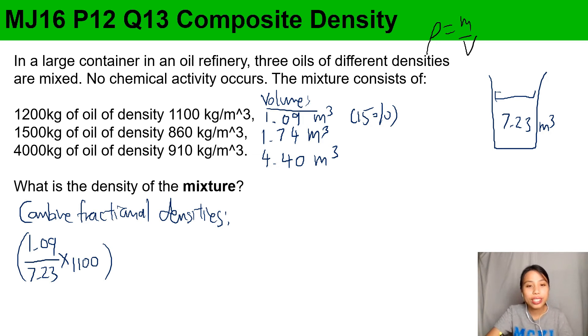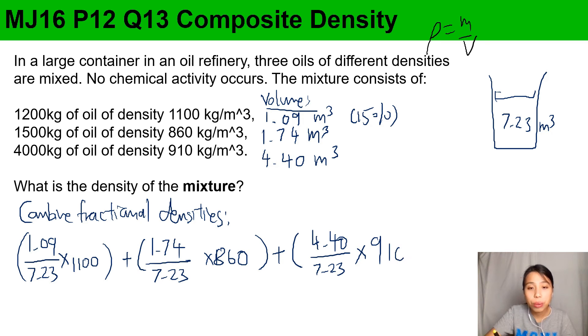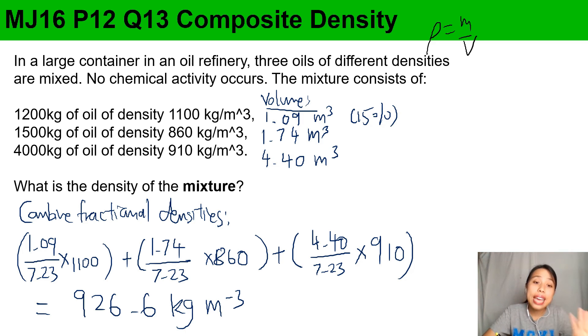I'm not going to use percentage to combine the fractional density because percentage means you times 100 - a bit troublesome. So then we have that one, the first one. Second one will be 1.74 over the total times density 860. And the last one, 4.4 over the total 7.23 times 910. Then we can calculate everything - got roughly about 926.6 kg per meters cube. That's how I can combine the fractional density of all the different oils.